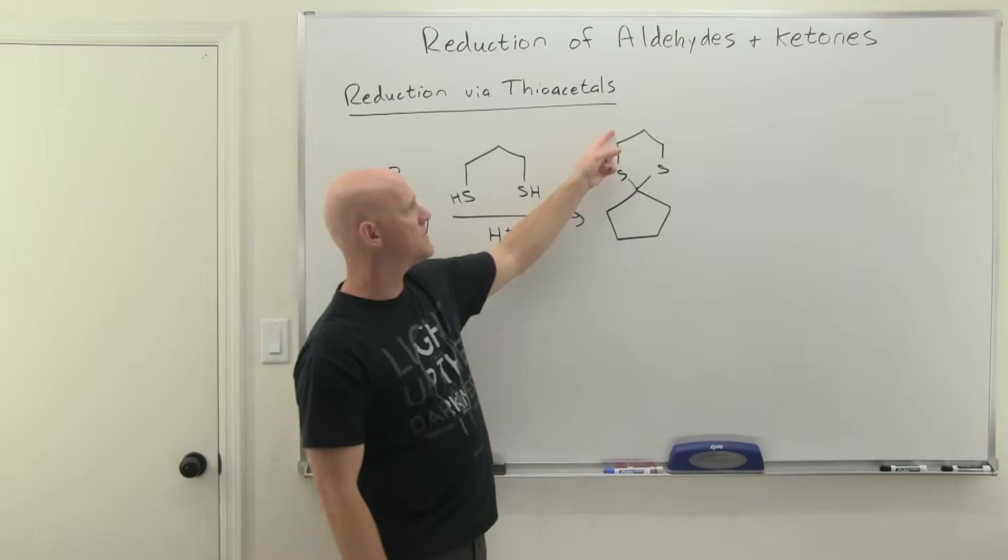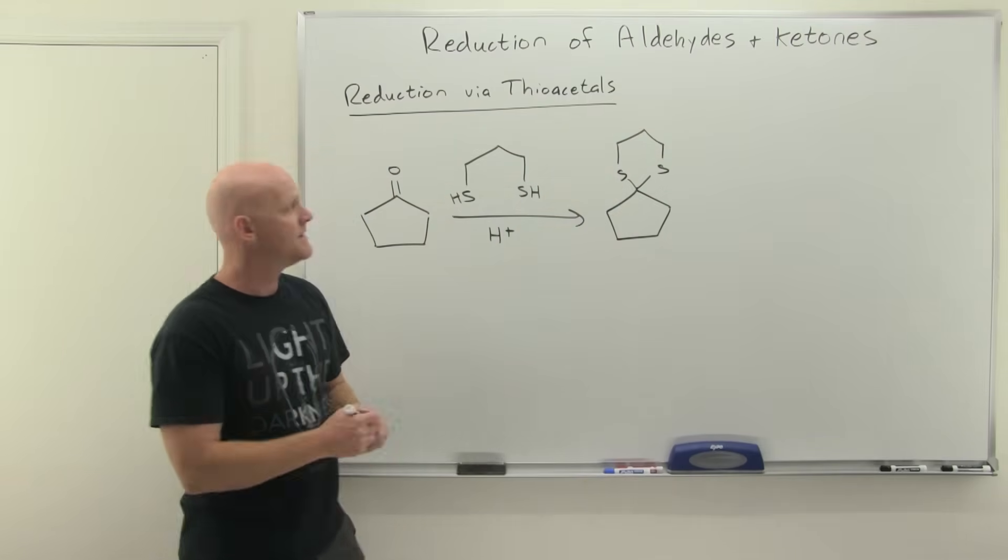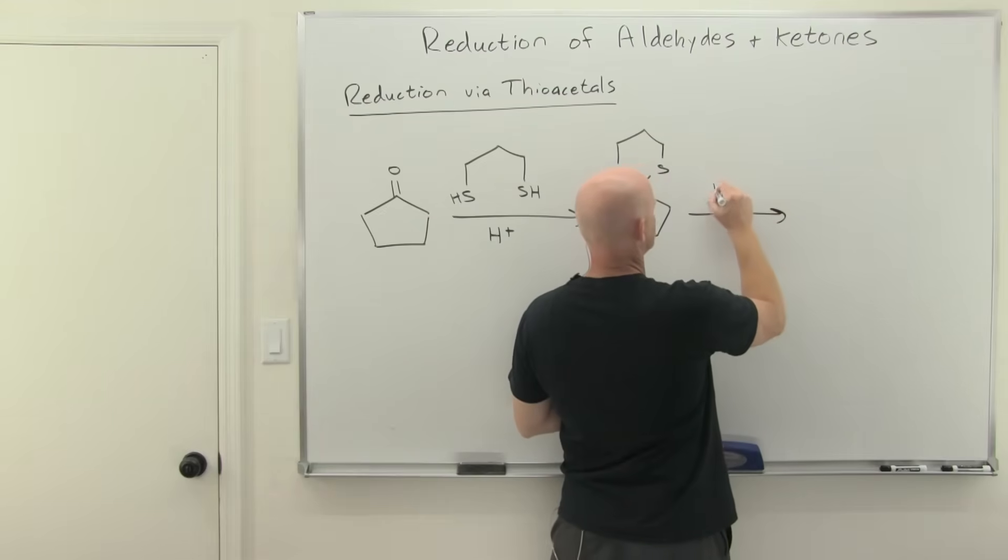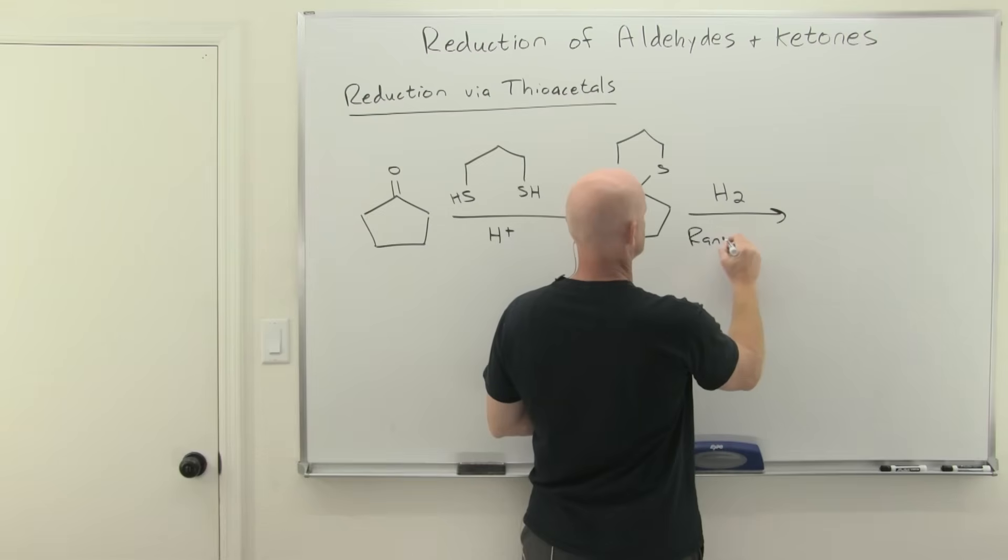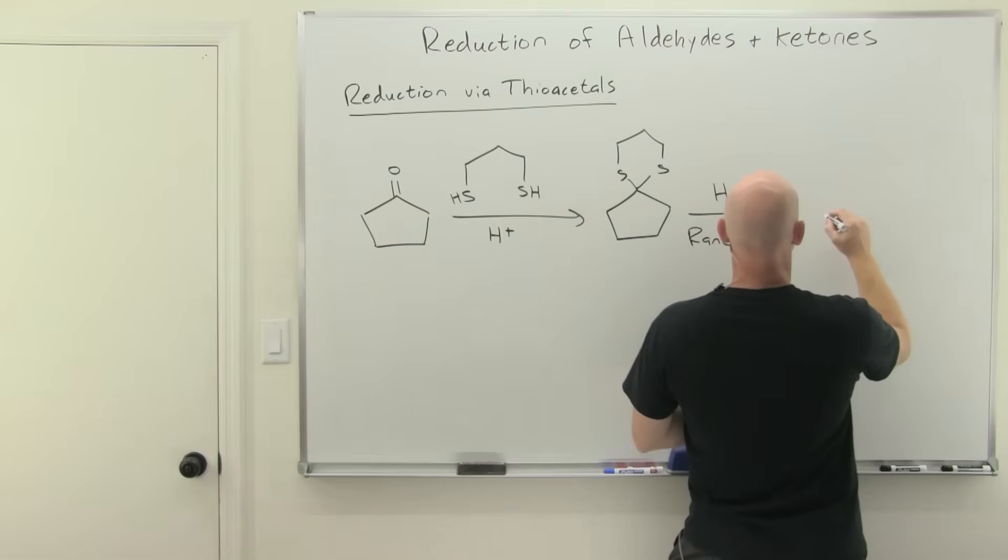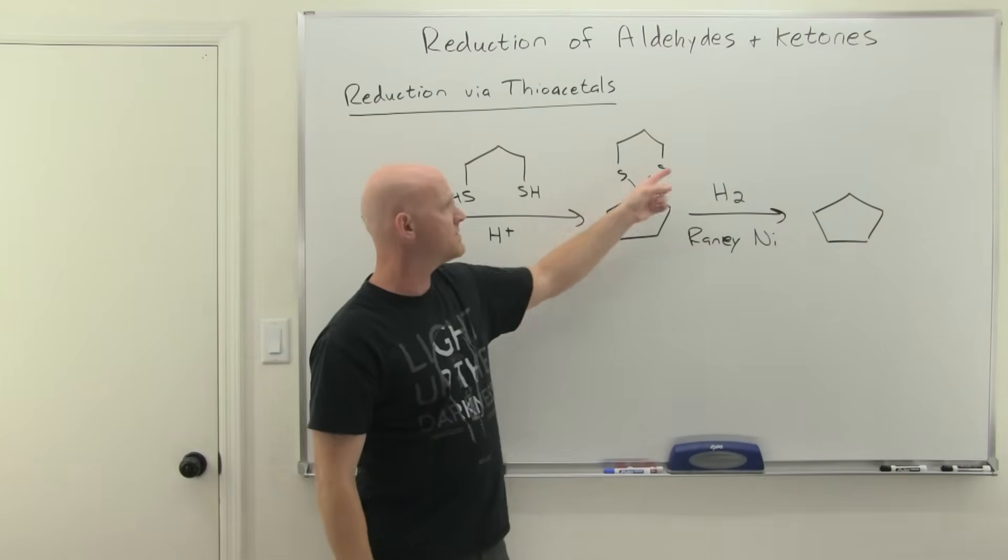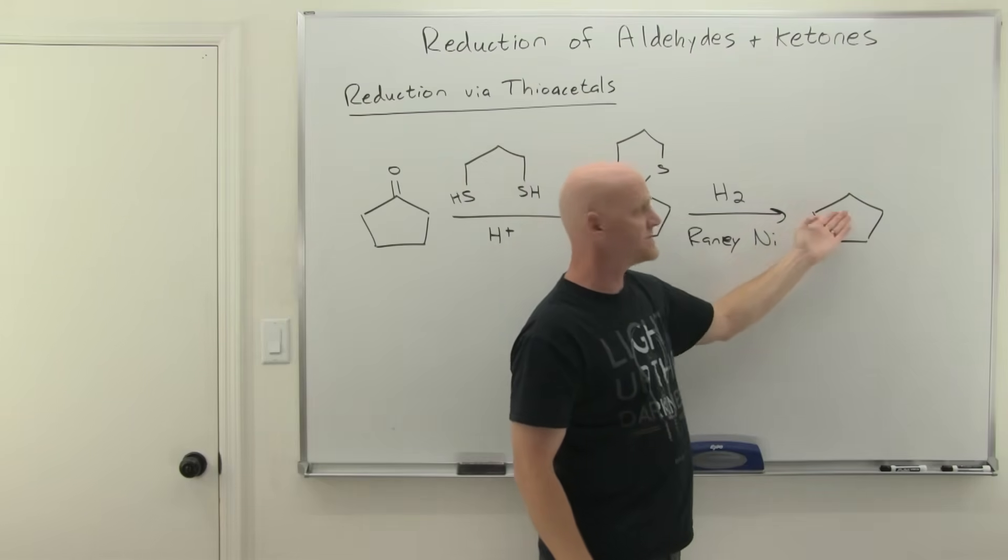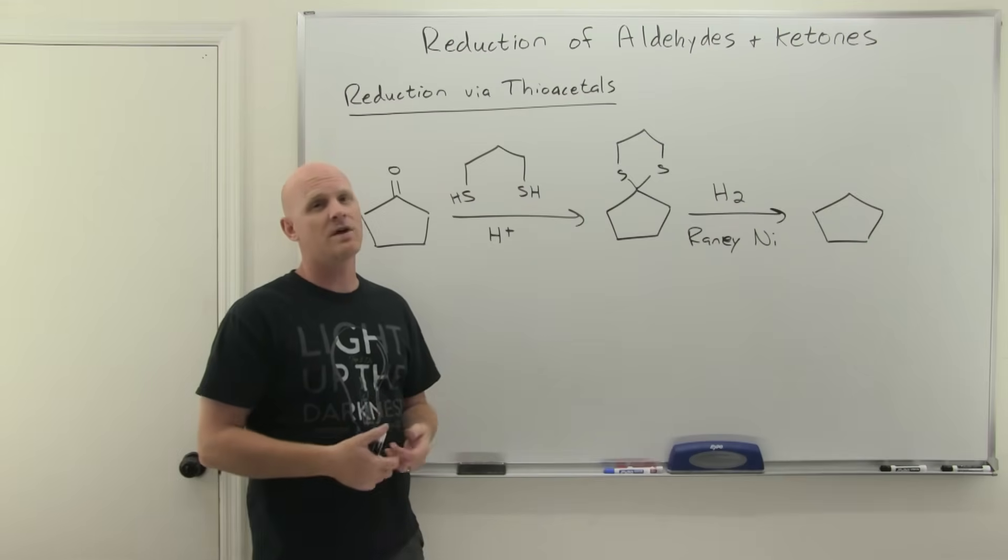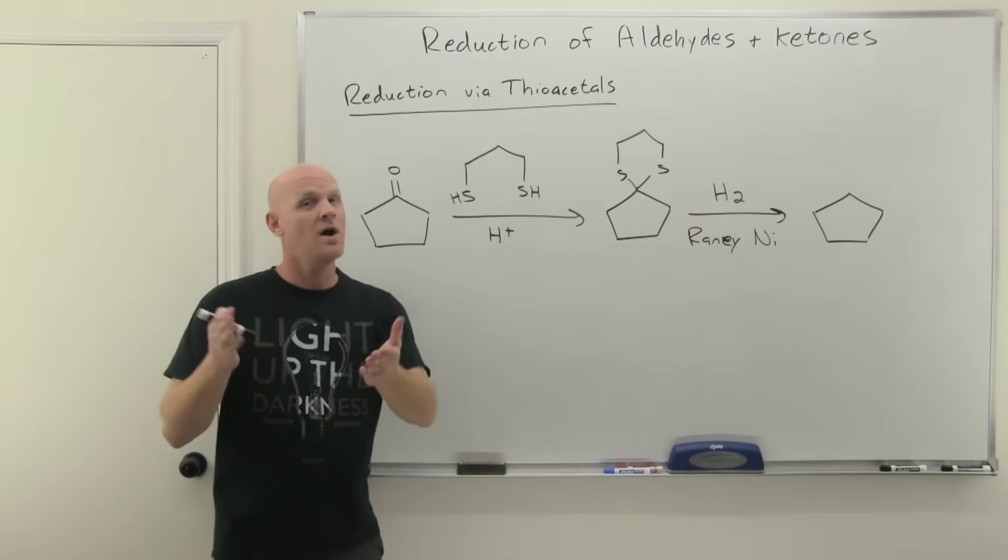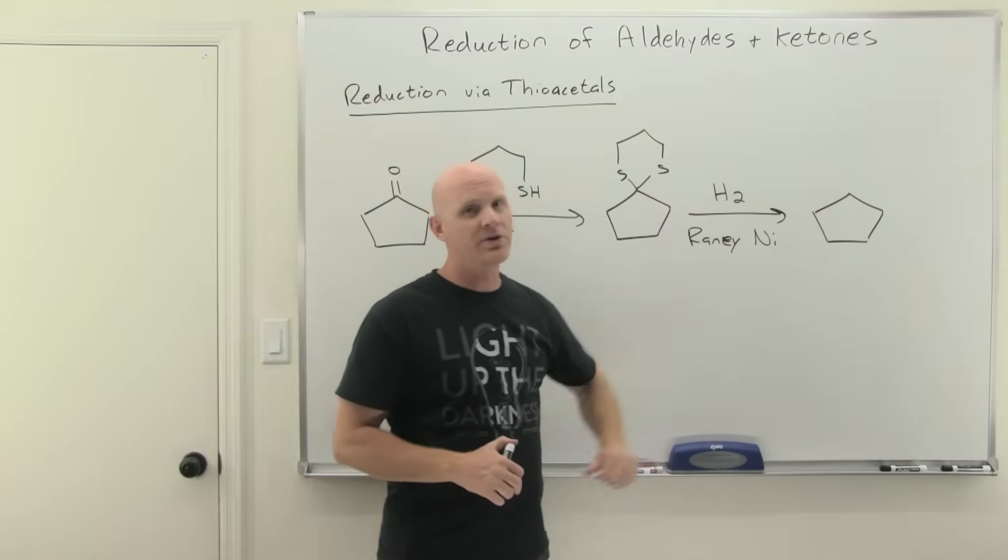Whereas ethylene glycol had two carbons between the oxygens, here we've got three carbons between the sulfurs. Then there's a reduction using hydrogen with rainy nickel as the special metal catalyst. It reduces all the way down to an alkane. We replace both bonds to sulfurs with bonds to hydrogens. This functionally accomplishes the same thing as the Clemensen and Wolf-Kishner reductions—complete deoxygenation, reducing aldehydes and ketones to the corresponding alkyl groups.